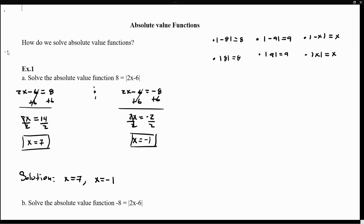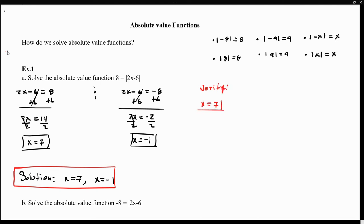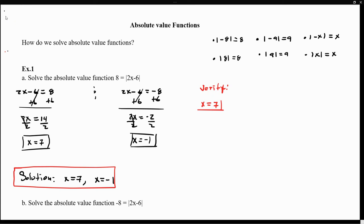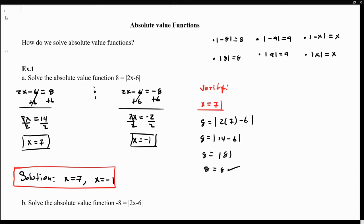Since we have time, let's verify. When x equals 7, we substitute into the original: 8 equals the absolute value of 2 times 7 minus 6. That gives 8 equals the absolute value of 14 minus 6, which is the absolute value of 8. The absolute value of 8 is 8, so 8 equals 8. This checks out — x equals 7 gives a true statement, so it is a solution.